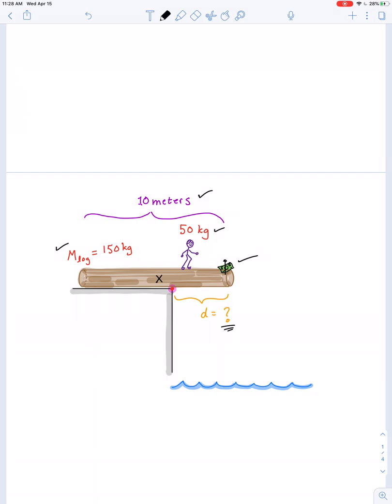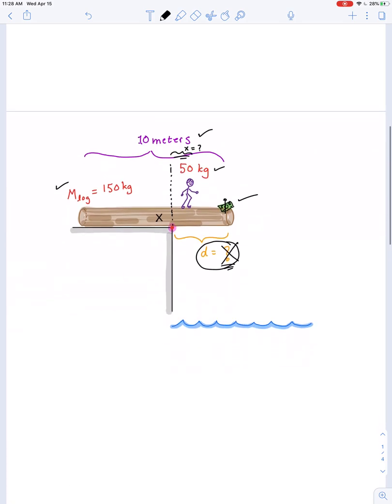Or the other question could be how far from the edge or from the axis of rotation can he safely walk, right? X equals question mark. So let's say we were given this distance d then how far could he walk? Let's create an equation to calculate for that.